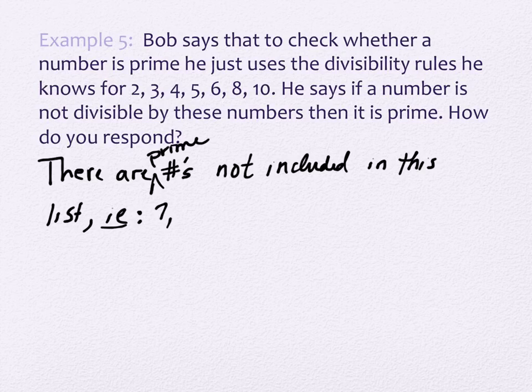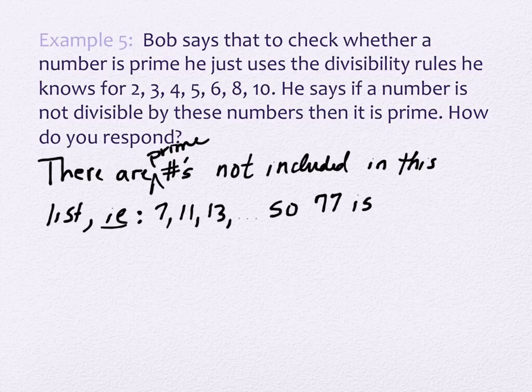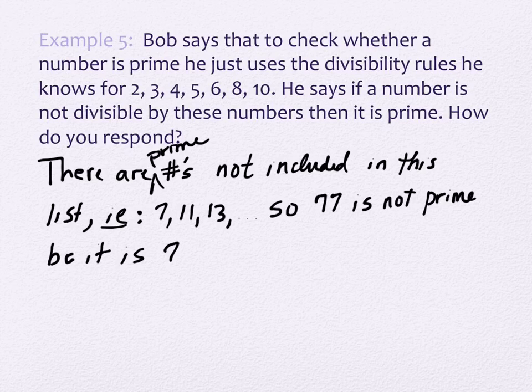So a number like 77 is not prime, right? Why? Because it is 7 times 11. It's divisible by 7 and 11, but it's not divisible by any of his list.